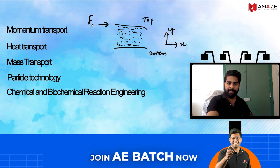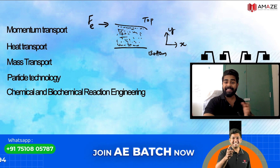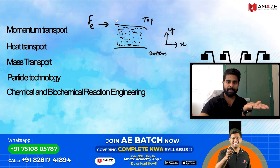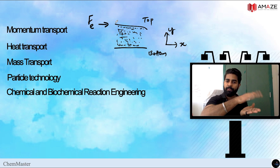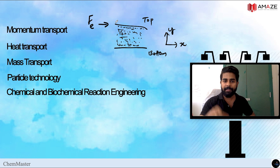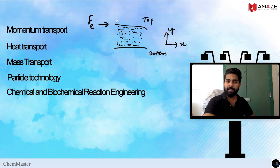We apply an external force F in the direction along the plates. This top plate is given a velocity. The top plate moves with a certain velocity, which influences the top layer of fluid.